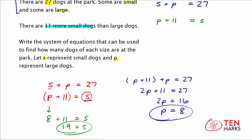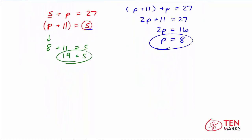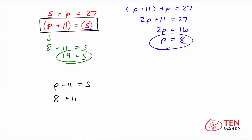Let me show you one last thing — you can check these answers using the equation p plus 11 equals s. I have values for both p and s, so I'll substitute them in: 8 plus 11 equals 19. 19 equals 19 — the equation holds true, so my solution is correct. There are 8 large dogs and 19 small dogs at the park.